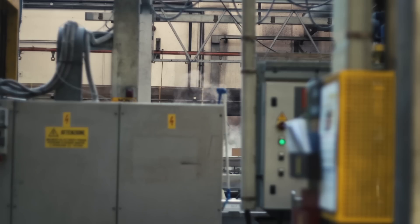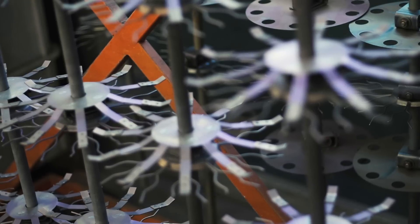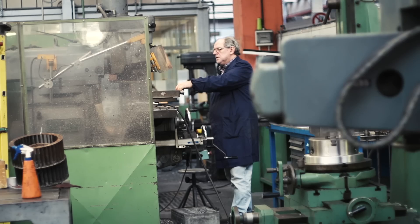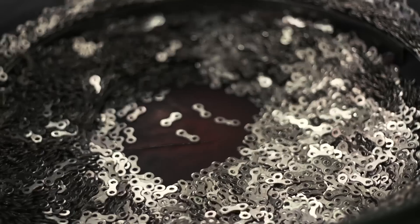The links are then transferred to another part of the factory to go through the anodising process. This is important to ensure the longevity of the chain and makes the chain initially a darker colour.